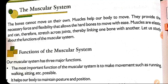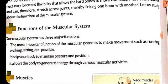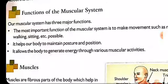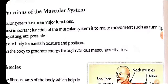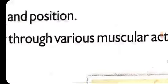Muscles stretch across the joints, thereby linking one bone with another. If you see, bones are connected with the help of muscles. So all the movements we do — our work, moving from one place to another, playing with friends — moving our bones is possible because muscles are attached with the bones. The function of the muscular system is to make movements such as running, walking, sitting, etc.